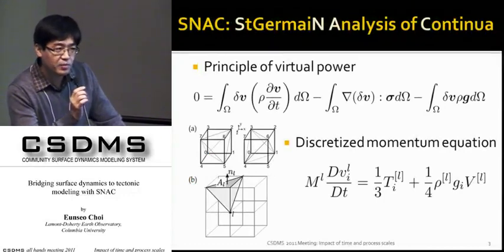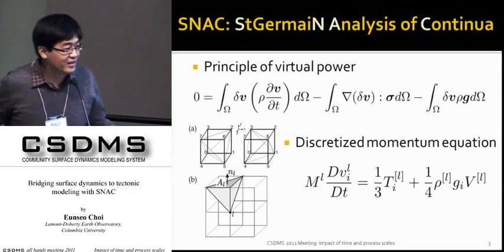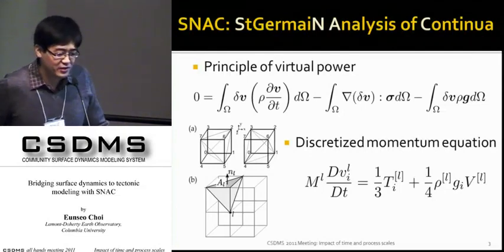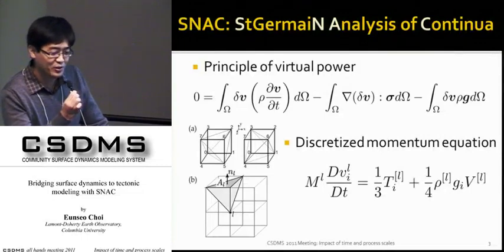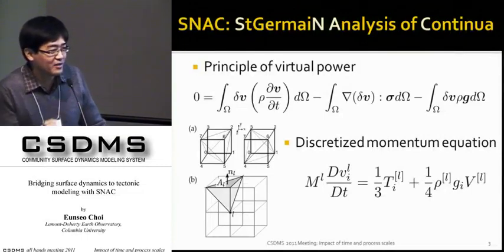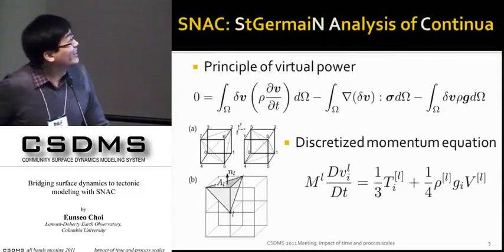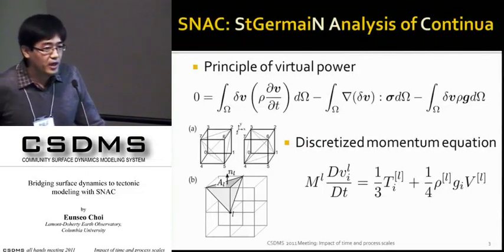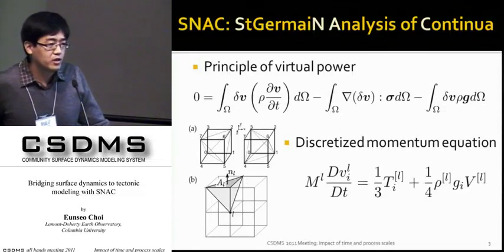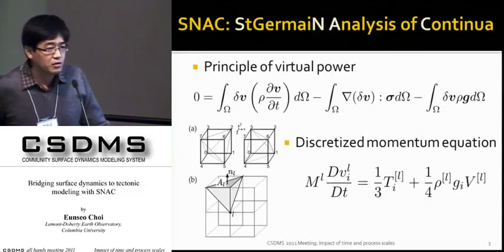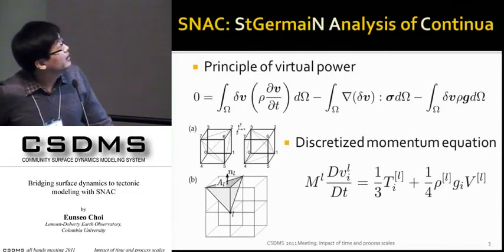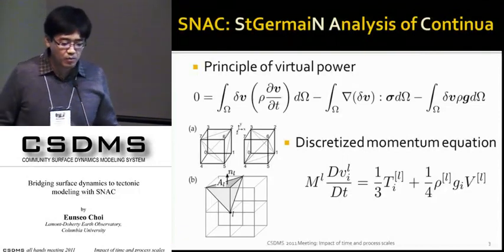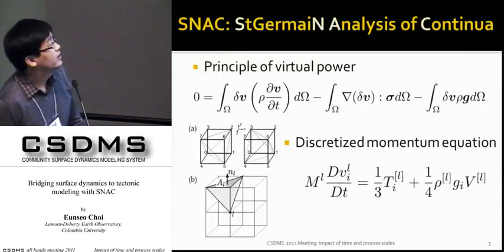More often than not, I have to worry about losing audience because of too much math, but this CSGMS meeting must be one of the exceptions, so I put up the equation slide first without being apologetic. Maybe I should apologize that there's too little math or too low-level math. Anyways, SNAC is an acronym for Saint Germain Analysis of Continua. Saint Germain is the name of the software framework on which SNAC is built, so the name itself doesn't have much meaning, but at least they sound friendly.